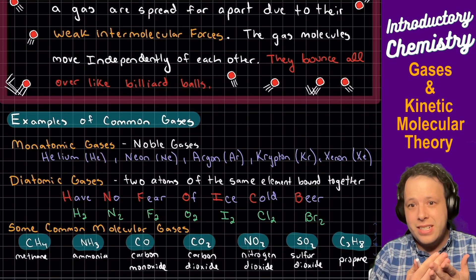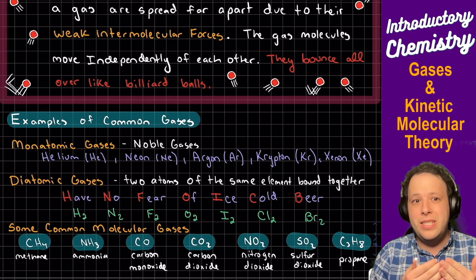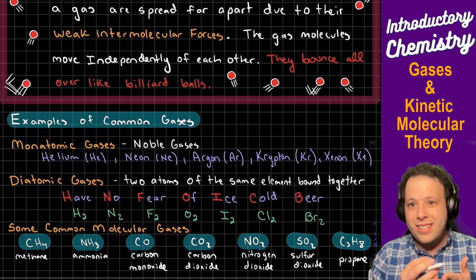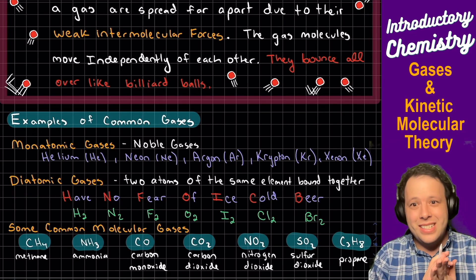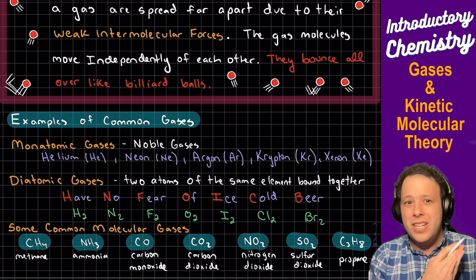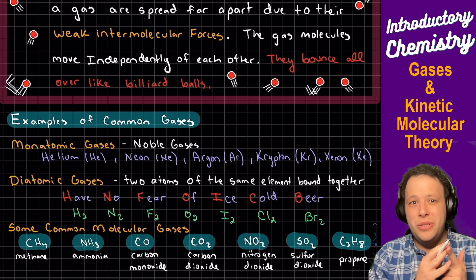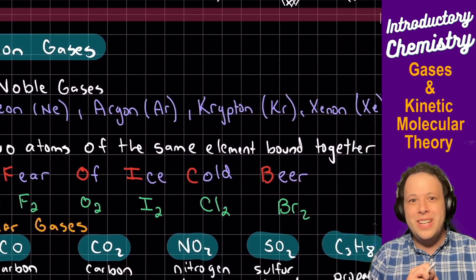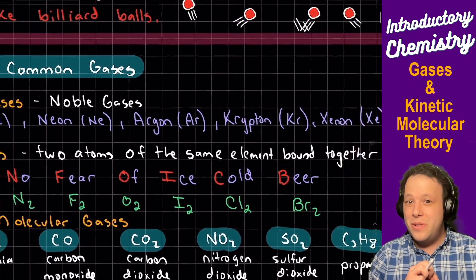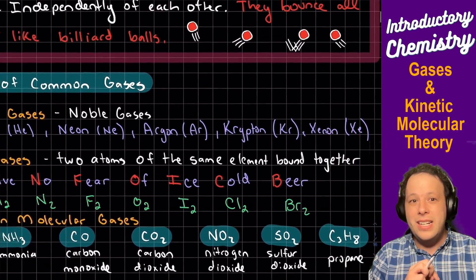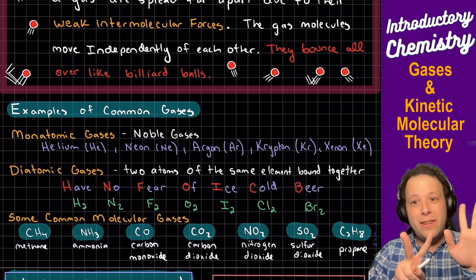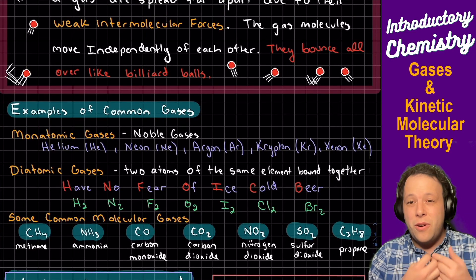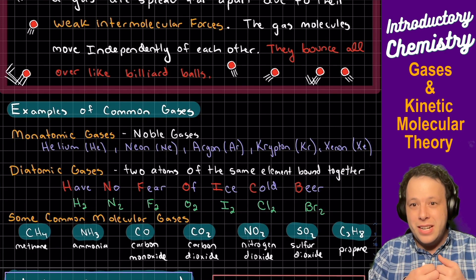So that last column of the periodic table starting with helium down to xenon - these are all, that's in its name, noble gases. Those are some of the most common ones you'll see. You also have the diatomic gases. An easy mnemonic to remember the diatomic gases is 'Have No Fear Of Ice Cold Beer.'